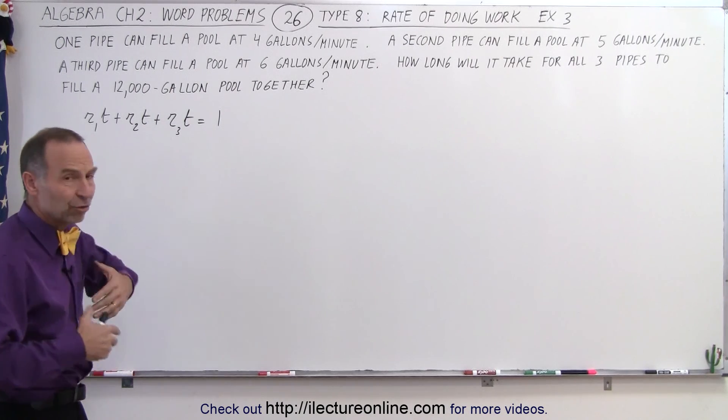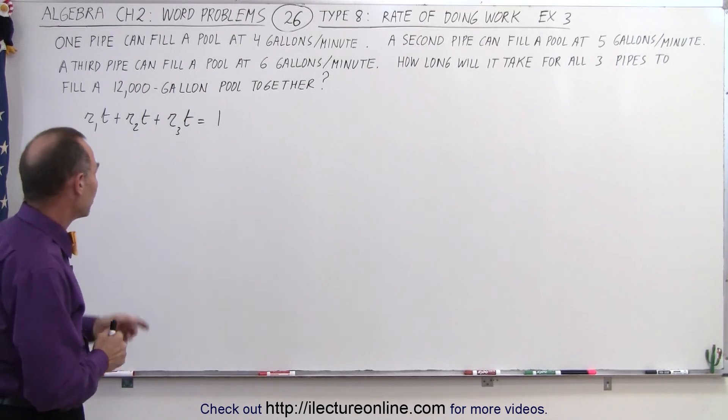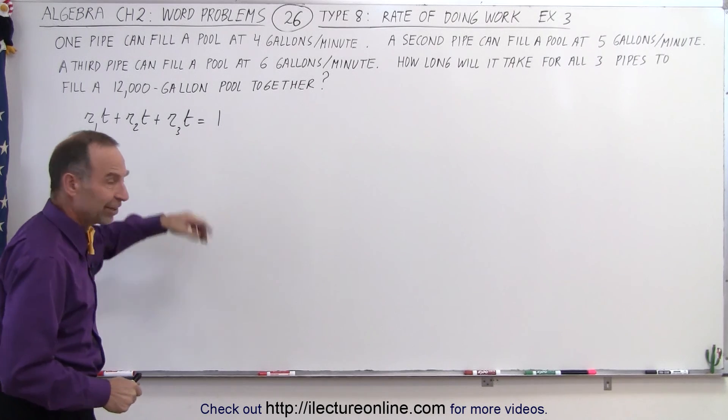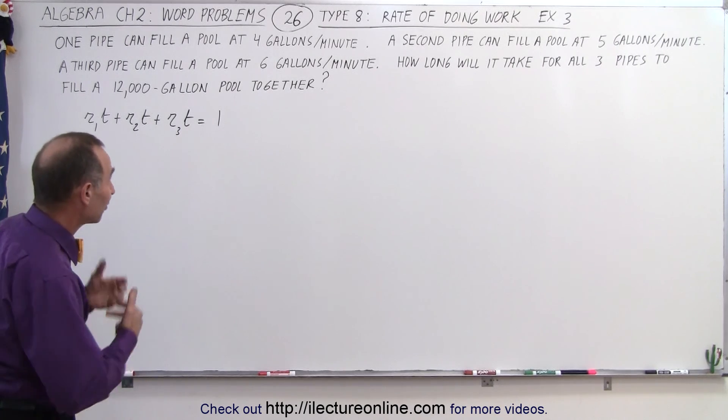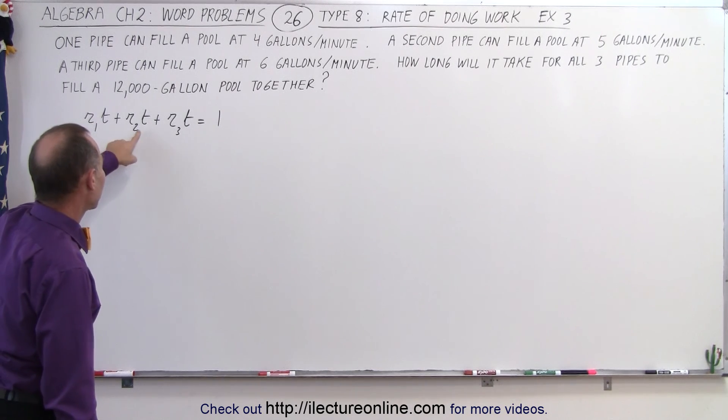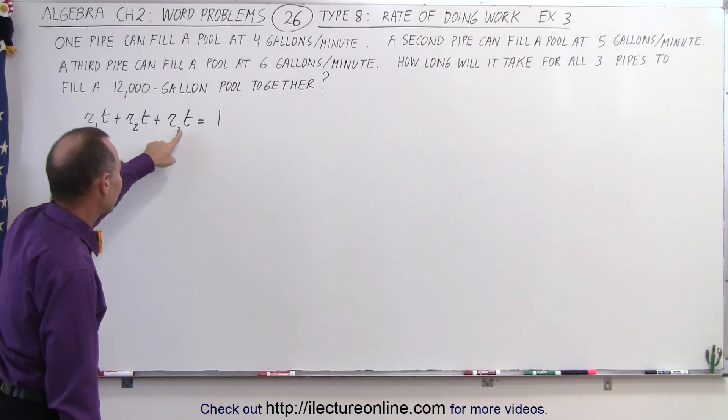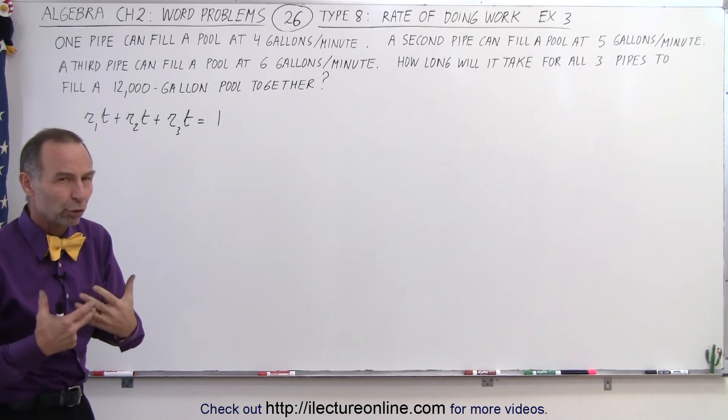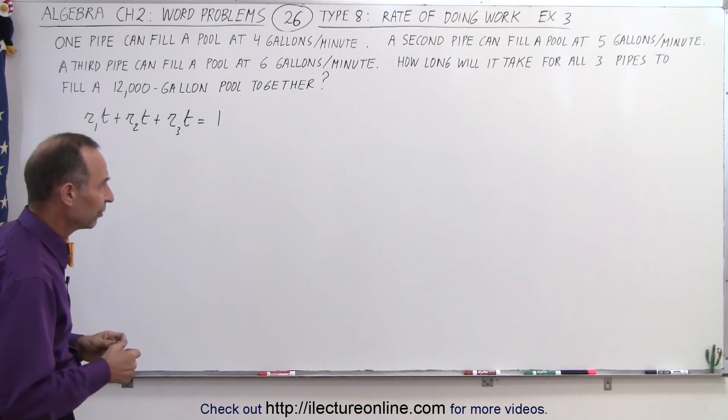Now we're going to use this technique. There's multiple ways in which you can solve this problem, but we're going to try to boil it down to this like we did on the first two examples of this type of problem. We're going to have the rate of the first pipe times the time plus the rate of the second pipe times the time plus the rate of the third pipe times the time equals 1, equals the whole job done, the whole pool filled.